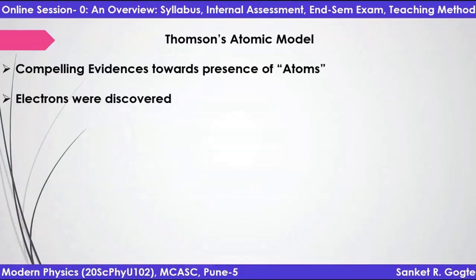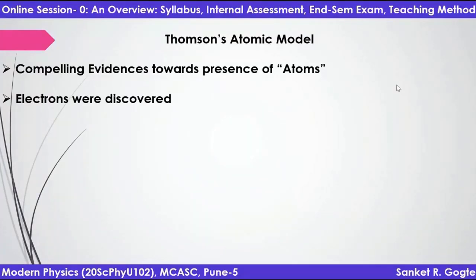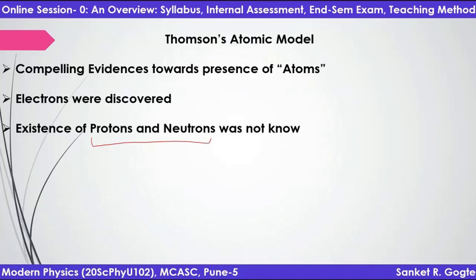One thing was established: electrons were discovered. Can someone tell me who discovered the electrons? It was Thomson. Proton and neutron, the other two major components of atoms, weren't discovered at that time. Electrons were discovered, but protons and neutrons weren't discovered — they were still to be discovered at that time.